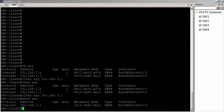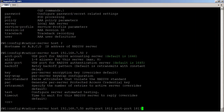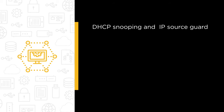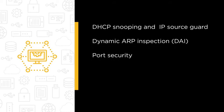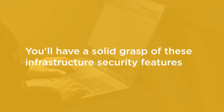Configuring and troubleshooting Cisco infrastructure security features can be a challenge, but it doesn't have to be. In this course you'll get hands-on experience learning advanced infrastructure security features such as DHCP snooping and IP source guard, dynamic ARP inspection, port security, storm control, and RADIUS and 802.1X. By the end of this course you'll have a solid grasp of these infrastructure security features.